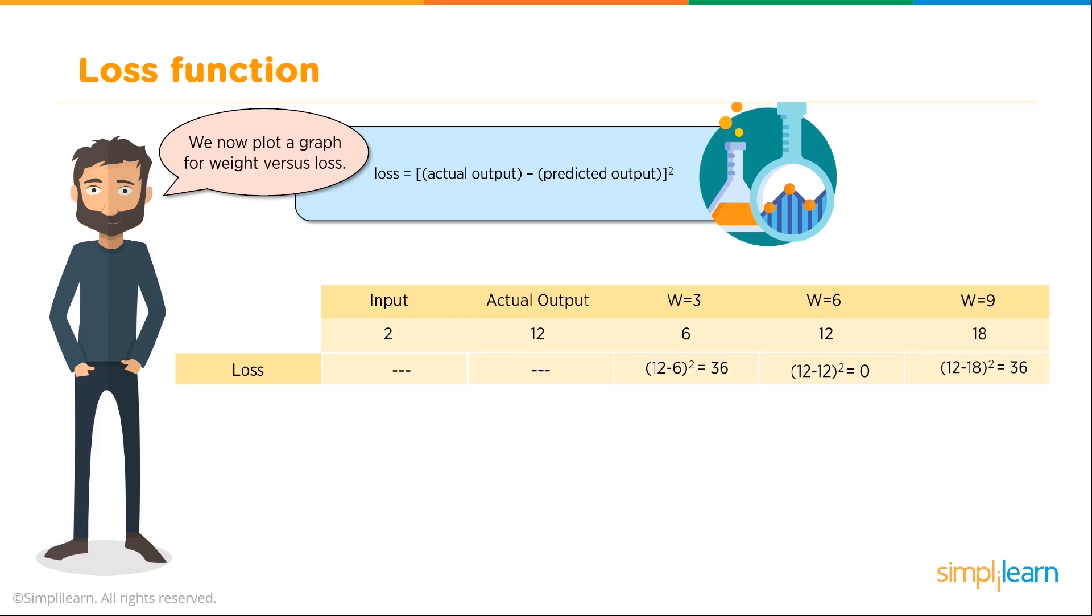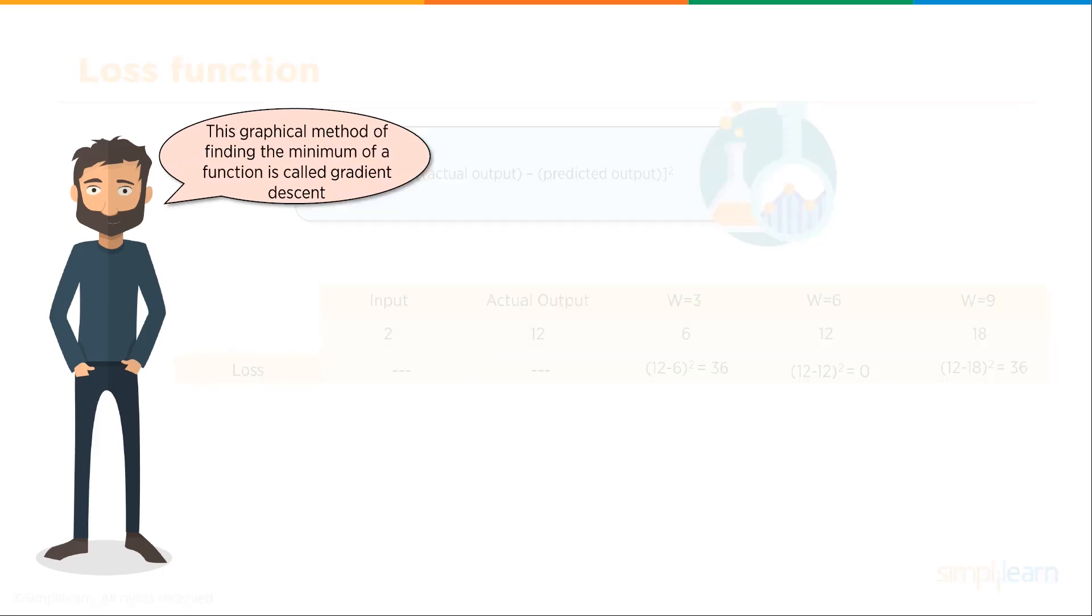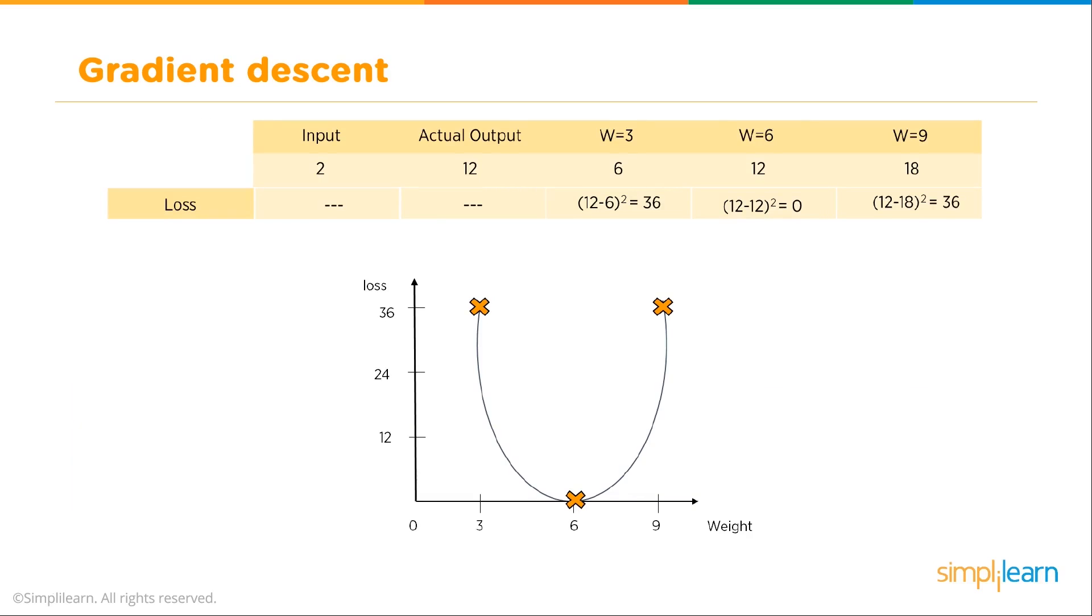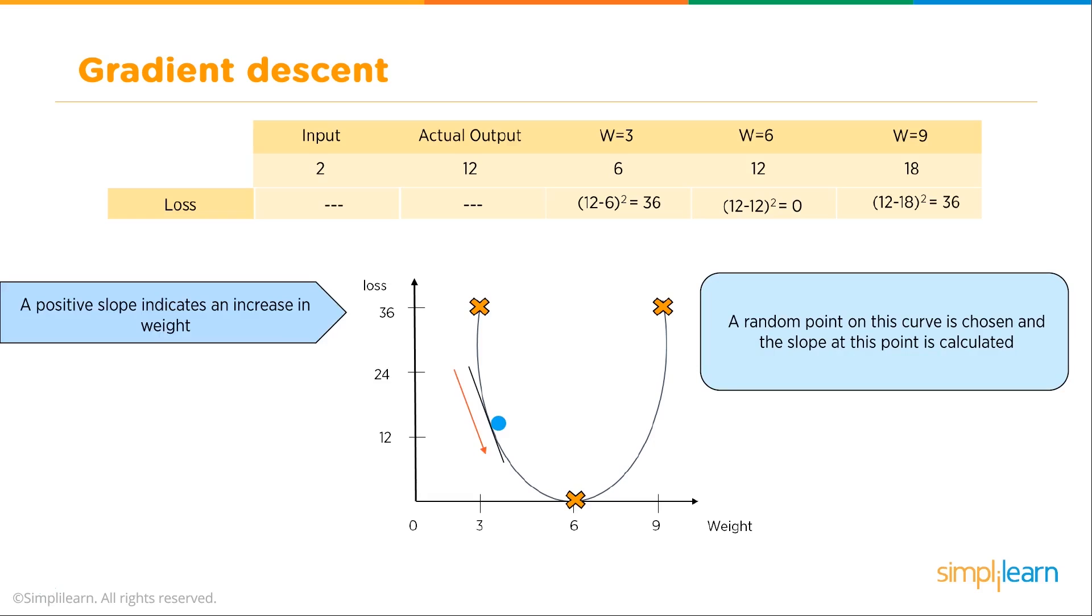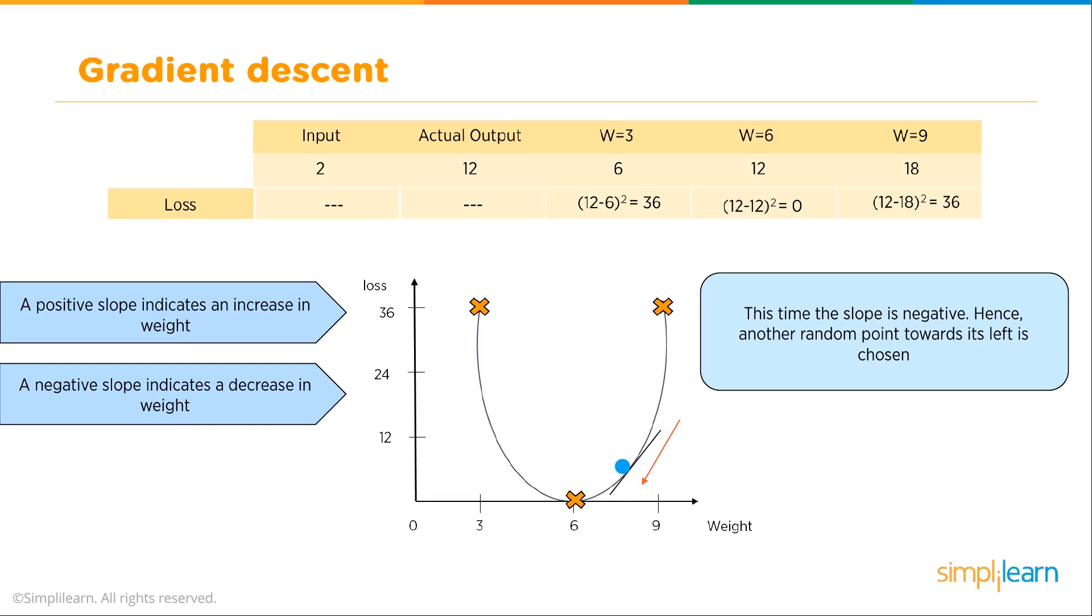We now plot a graph for the weight versus loss. It always helps to have a nice visual of what's going on here. This graphical method of finding the minimum of a function is called gradient descent. And this is the logic behind this. We graph the loss. We have 36 for 3 and 36 for 9. We happen to guess 6, which was the correct answer right in the middle. It forms a nice little parabola. You can see a nice mark right in the middle. As a human being, we can look at that and say the answer is 6. A random point on this curve is chosen and the slope at this point is calculated. Now we're getting away from the human aspect of just looking at it and saying what the answer is, and we look at what's going on with the math. If we have a positive slope, it indicates an increase in the weight. A negative slope indicates a decrease in weight. This time the slope is negative, hence another random point towards its left is chosen. We're actually kind of just playing a little high-low game going back and forth with the gradient descent.